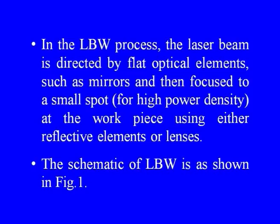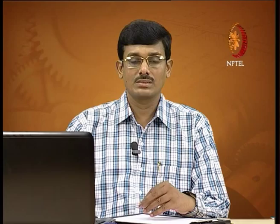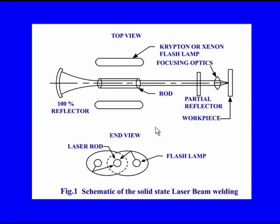This is the schematic of the laser system we were just discussing. This is the lasing material, also called the lascent — shown as a rod, which can be a ruby rod for a solid-state material, or a neodymium-yttrium-aluminum-garnet rod. Apart from solid-state materials, gases such as argon, helium-argon systems, or carbon dioxide — which is very popular — can also be used as lasing materials.